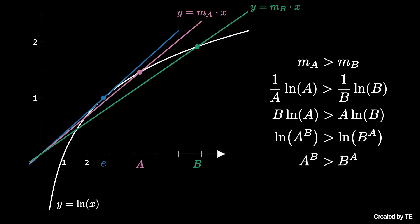As the natural log is increasing, a to the b is greater than b to the a. Thus, if e is less than or equal to a and a is less than b, then a to the b is greater than b to the a.